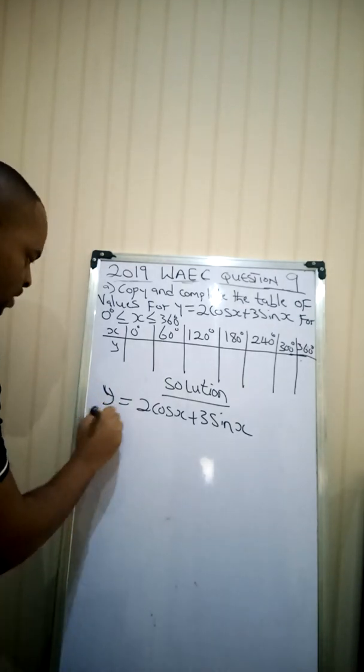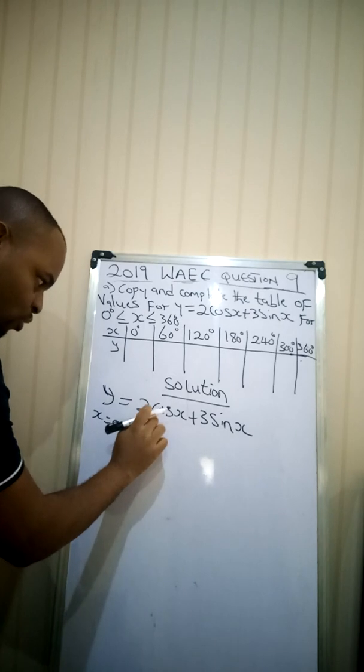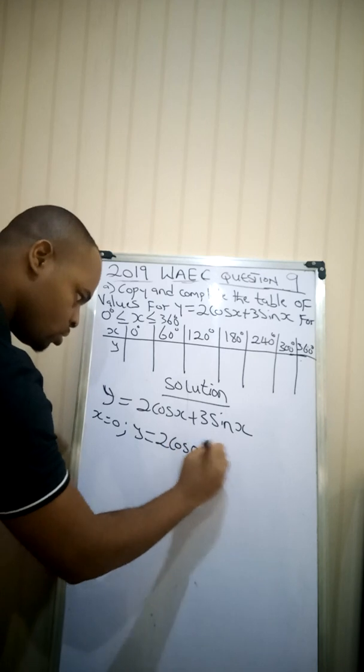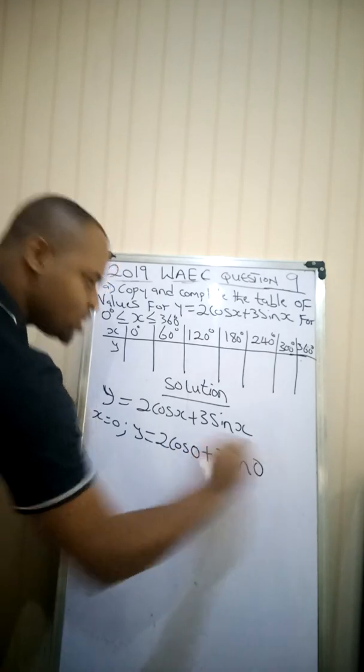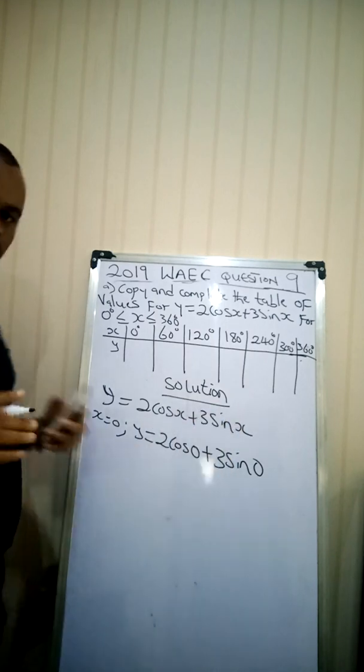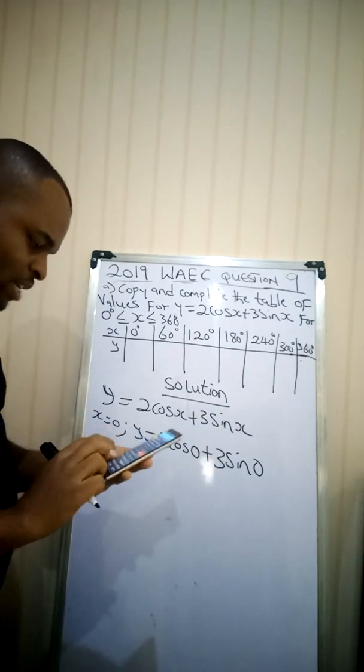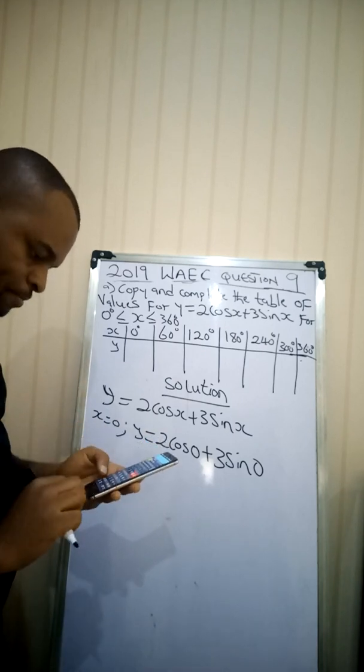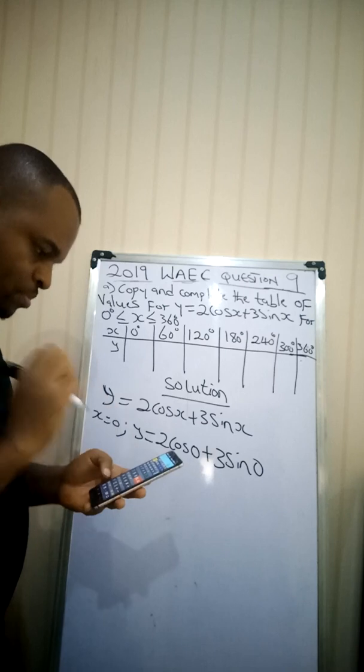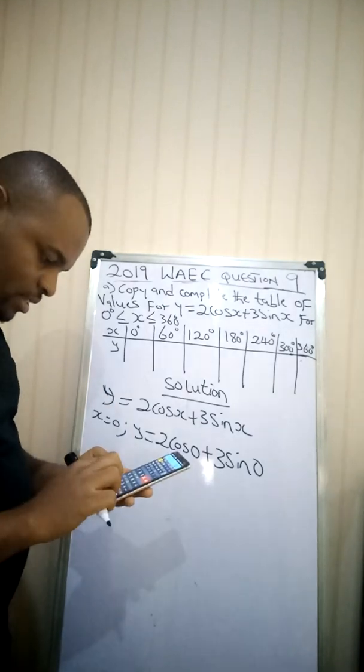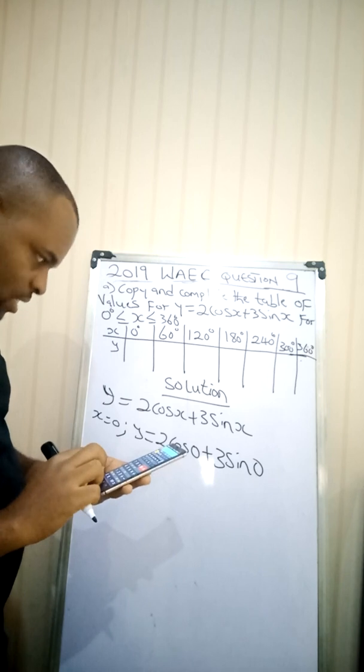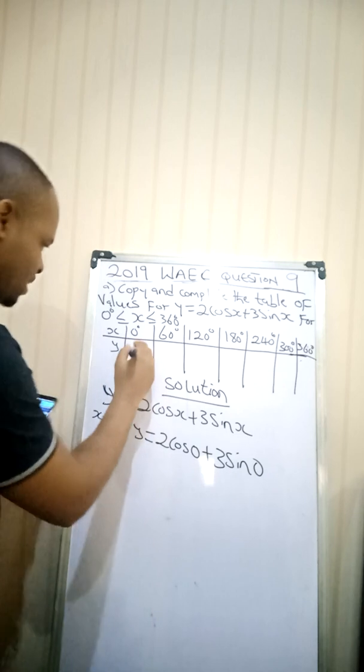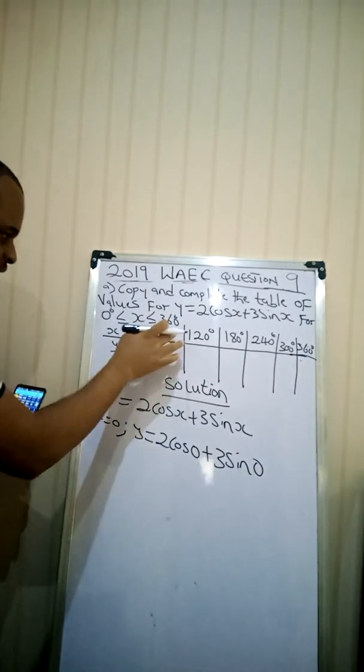So when x is 0, you introduce the value of x here. So that you'll be having y equal to 2cos(0) plus 3sin(0). That's what you do. So use your scientific calculator to punch it out. I have mine here. I'll be having 2 multiplied by cos(0) plus open bracket of 3 multiplied by sin(0). Close the brackets. Equal to. So I'm having my value of y as 2.